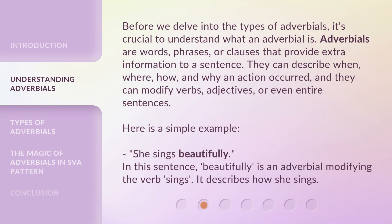Let's unravel the magic behind types of adverbials and how they can make our sentences more expressive and meaningful. Before we delve into the types of adverbials, it's crucial to understand what an adverbial is. Adverbials are words, phrases, or clauses that provide extra information to a sentence. They can describe when, where, how, and why an action occurred, and they can modify verbs, adjectives, or even entire sentences. Here is a simple example: she sings beautifully. In this sentence, beautifully is an adverbial modifying the verb sings.